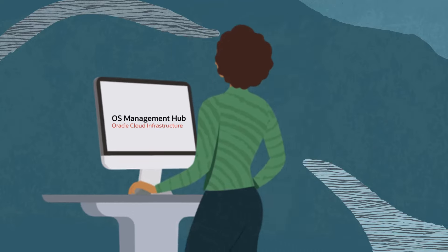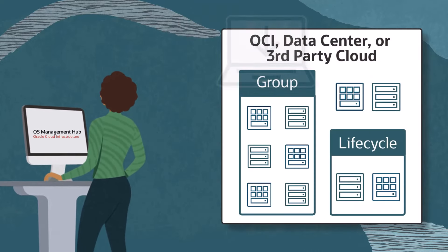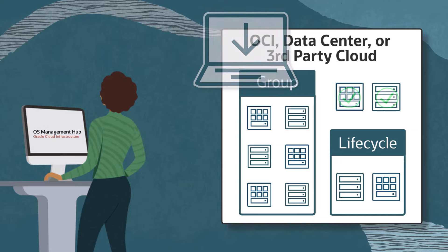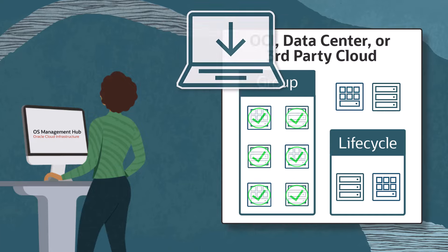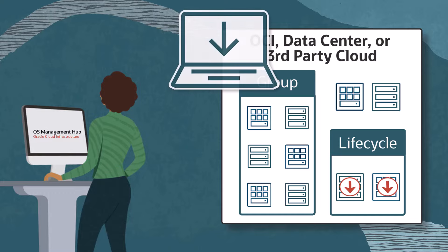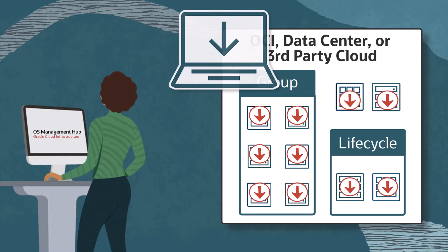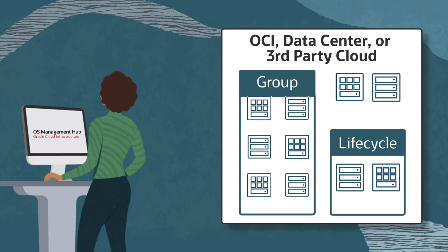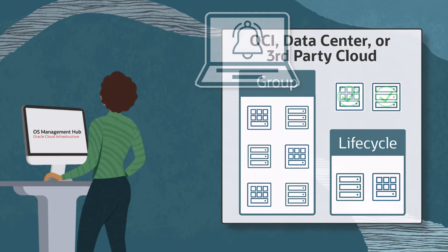A job is an action that Oracle OS Management Hub takes against one or more instances, such as installing updates or attaching software sources. When a job runs, it applies updates to instances, a group of instances, or all instances in a compartment. Instances are systems that are managed by OS Management Hub. A job can be run immediately or scheduled for a future date and time.